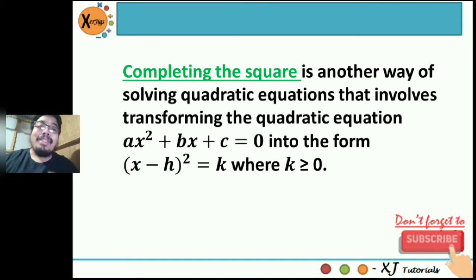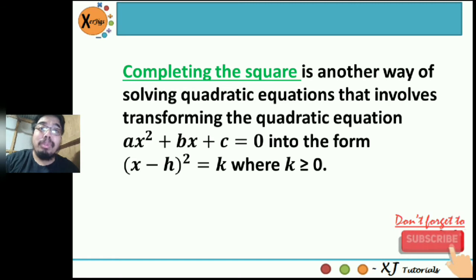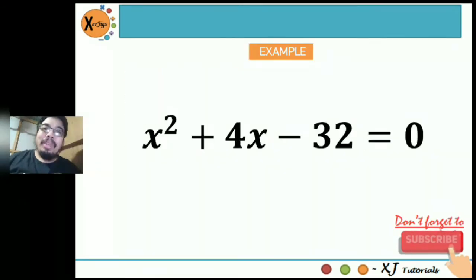The reason why k should not be less than zero is because, using our extracting the square root method, if k is less than zero then we will have imaginary roots and there will be no real solutions. Here's an example: x squared plus 4x minus 32 equals zero. We will try to solve this equation by completing the square.